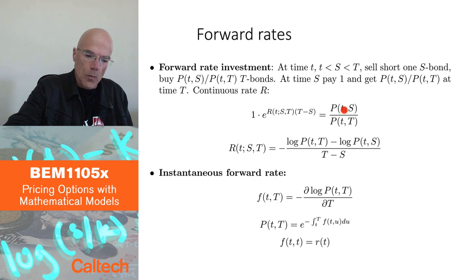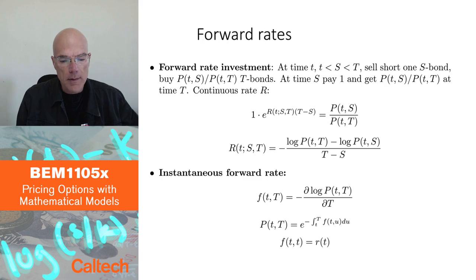So, $1 goes to this ratio at time T. In between, from S to T, there is some rate, if you think of it as continuously compounded, then 1 times e to that rate times T minus S has to be equal what you get at time T. This is denoted R(t,S,T). And that's the forward rate between time S and time capital T.